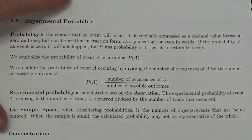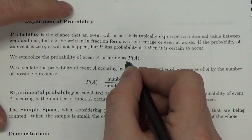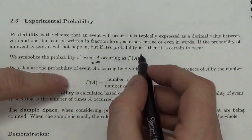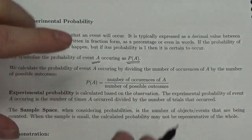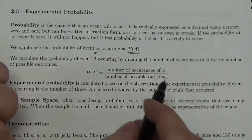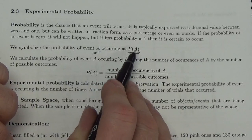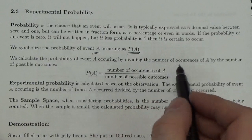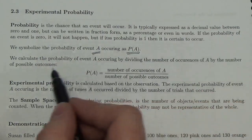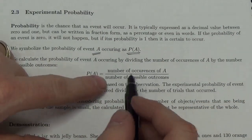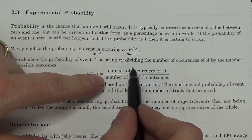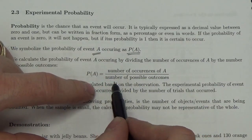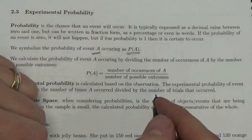When we calculate the probability, we're usually going to symbolize the event as an uppercase letter. We use P with parentheses around the A to represent the probability that event A occurs. We calculate the probability of an event occurring by dividing the number of occurrences of A by the number of possible outcomes — the number of positive outcomes divided by the total number of possible outcomes in an experiment.